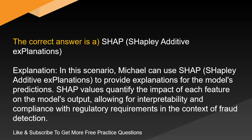The correct answer is A. SHAP — Shapley Additive Explanations. In this scenario, Michael can use SHAP to provide explanations for the model's predictions. SHAP values quantify the impact of each feature on the model's output, allowing for interpretability and compliance with regulatory requirements in the context of fraud detection.